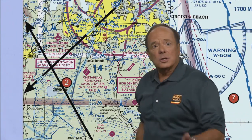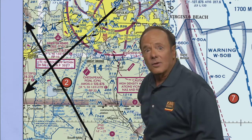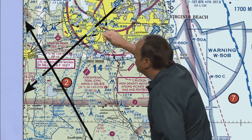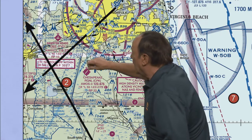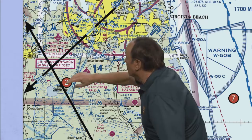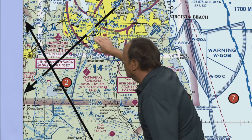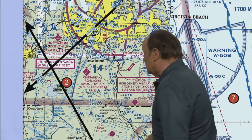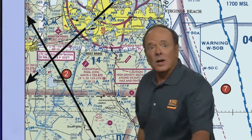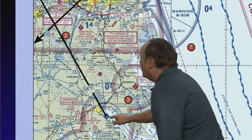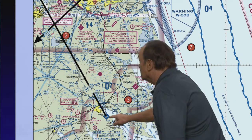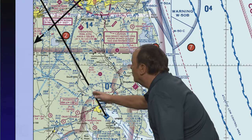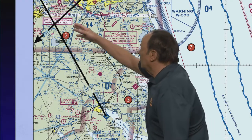They're going to ask you a question about this. First, you find the Norfolk VORTAC and you're on the 233 degree radial - that's actually Victor 1, but it's the 233 degree radial. They also say you're on the 340 degree radial of the Elizabeth City VOR. So we look at the Elizabeth City VOR DME - there's a little dot where it is - and you draw from that dot up through the compass rose, going out the 340 radial to hit the other line.